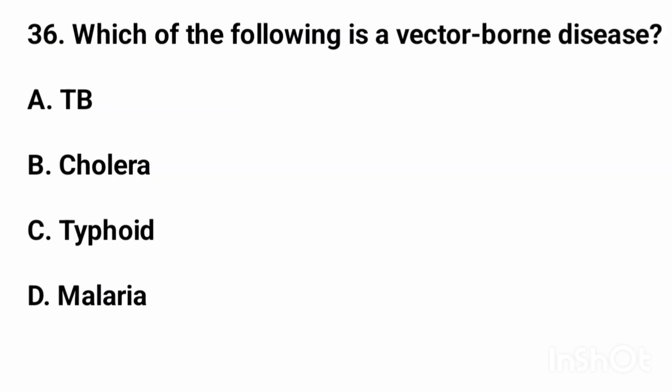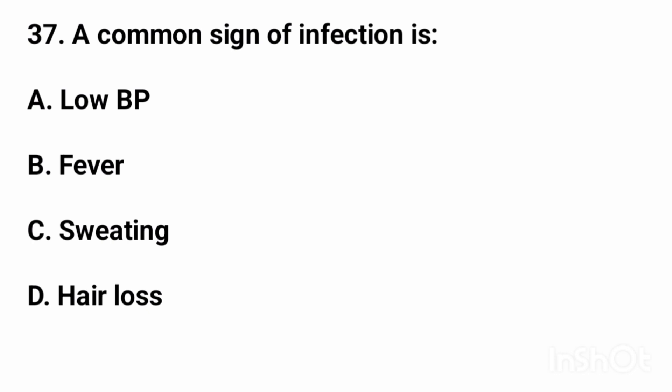Question number 36: Which of the following is a vector-borne disease? The right answer is option D: malaria. Question number 37: A common sign of infection is? The right answer is option B: fever.